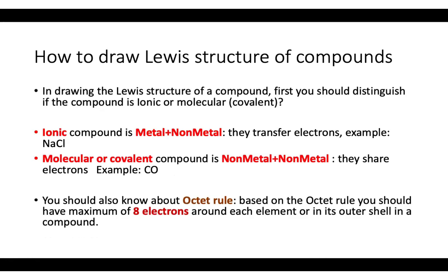Before continuing, you should also know about the octet rule. In drawing the Lewis structure, recall that neon had eight electrons around it — two on each side. Our goal when drawing the Lewis structure of a compound is that we ultimately want eight electrons around each element. This is called the octet rule, which will be explained further in the next slides.